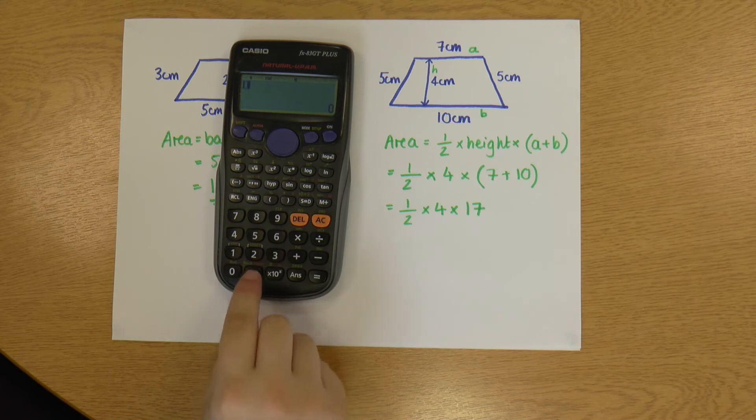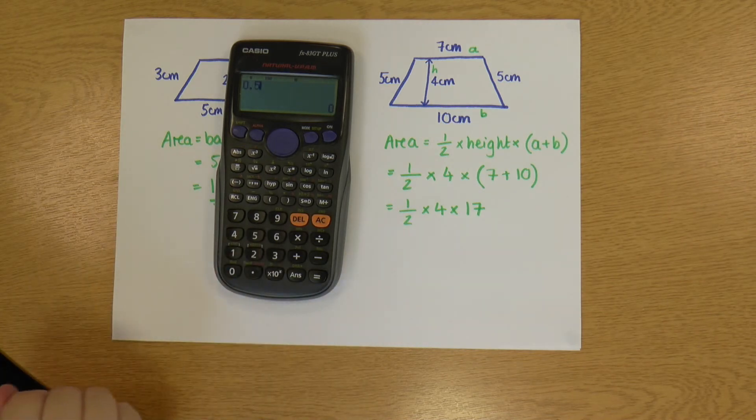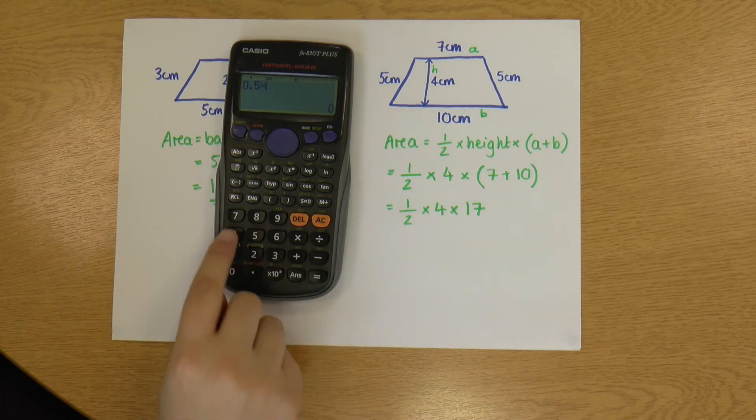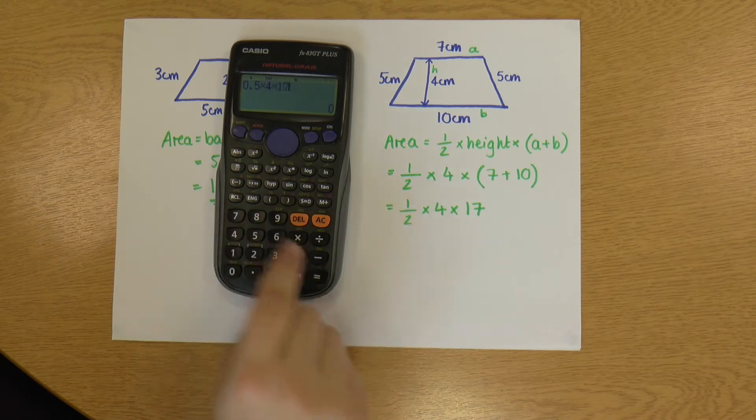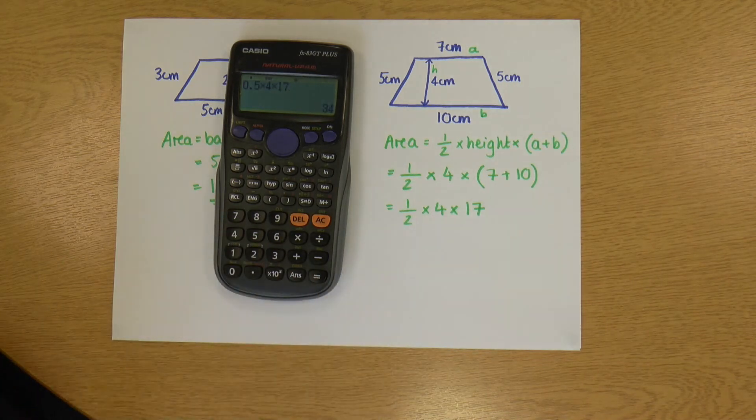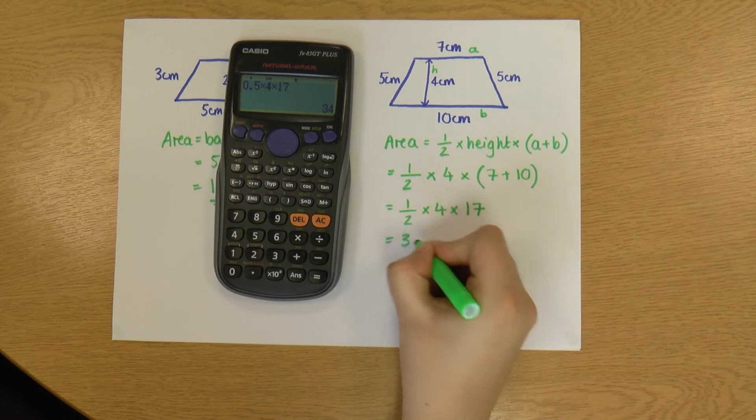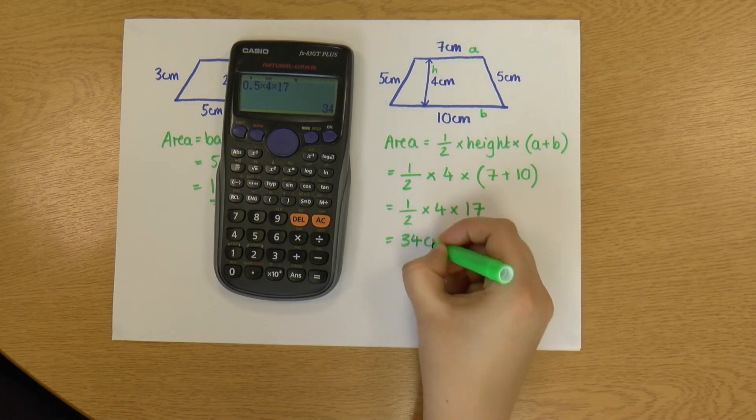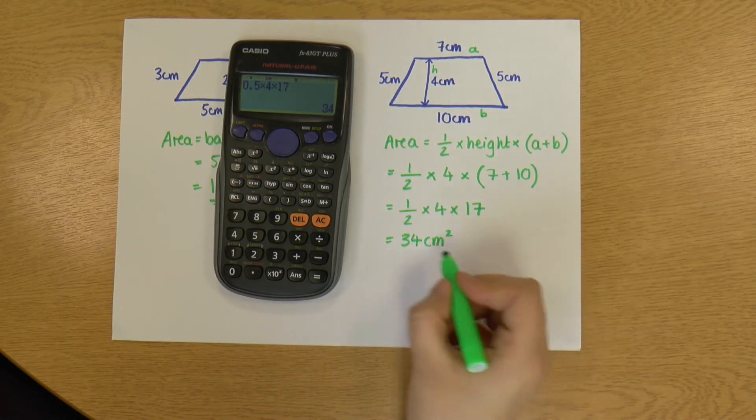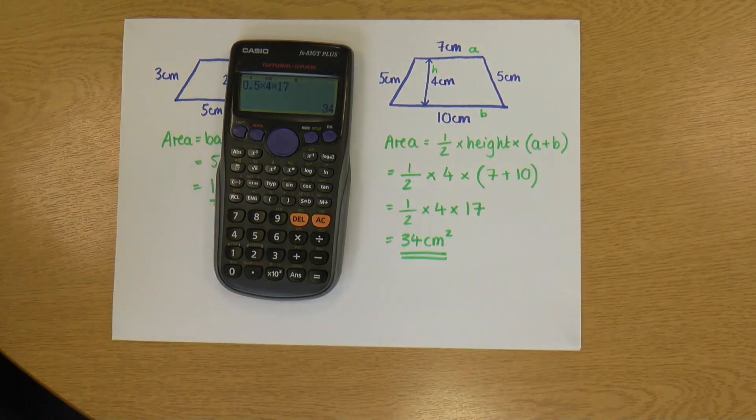Let me grab it. I'm going to do half - well, half is the same as 0.5, so I'll use that instead. 0.5 times 4 times 17 is 34. And again, unit squared, so centimeters squared. That is the area of my trapezium.